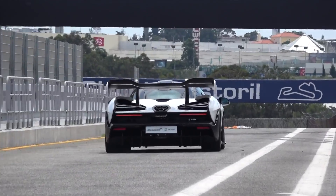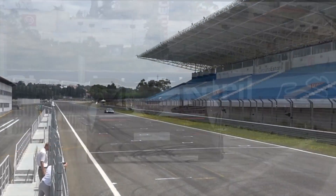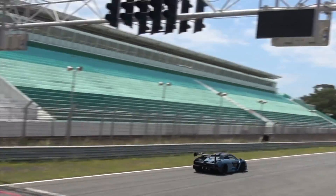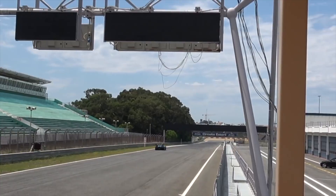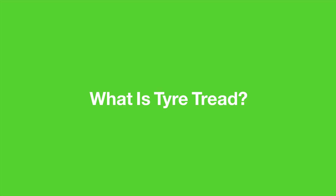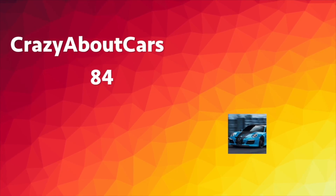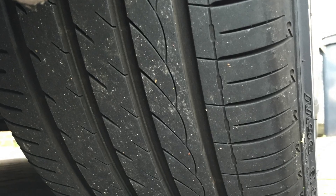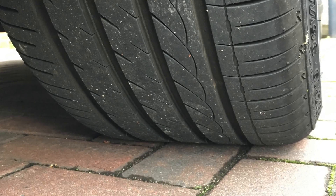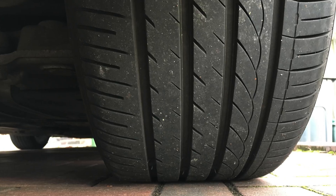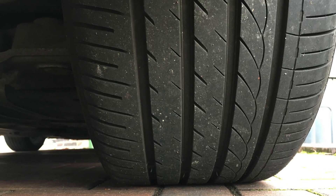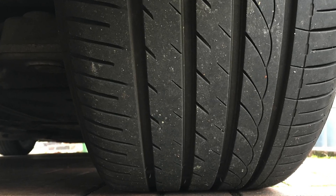Please note that this video will be focusing on the tread patterns of road cars. But first of all, what is tyre tread? Tyre tread is the rubber on the tyre that makes contact with the road. The larger the contact area you have with the road, the more grip you will get.